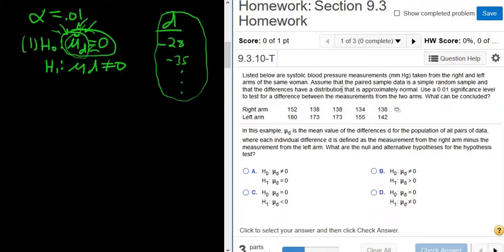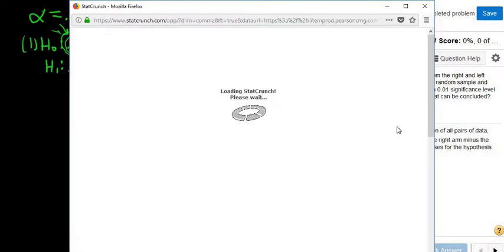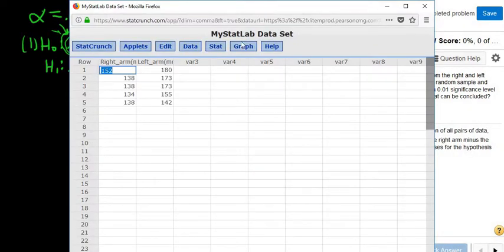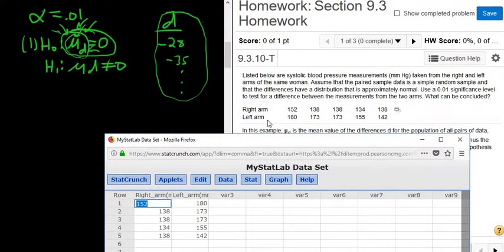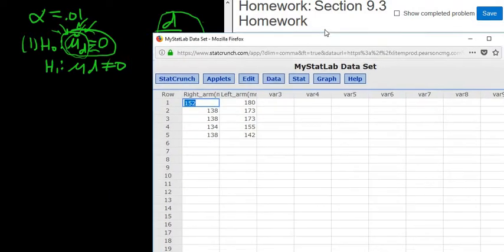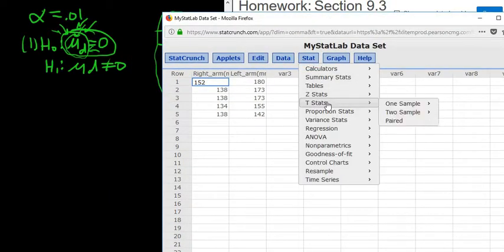So to do it, we're going to use what's called paired in StatCrunch. It's stat t paired. So you click on this little box, and you click open in StatCrunch. So whenever you see the word paired in the problem, see it says paired here, paired sample data, or you have like the same woman or before and after data, it's always paired. So you click Stat, T, and then paired.